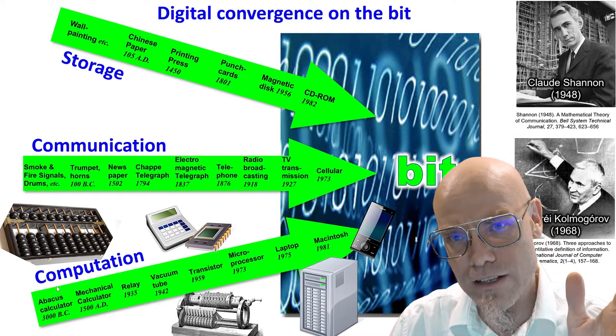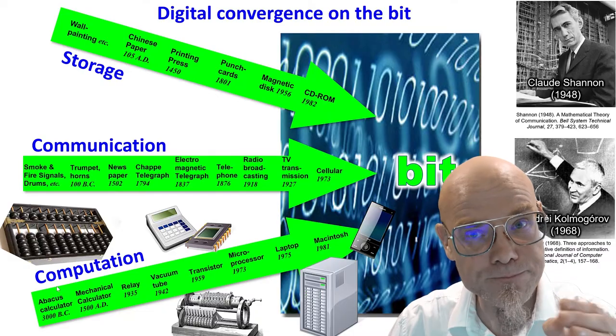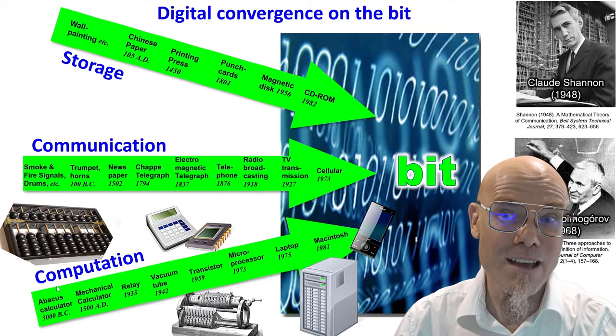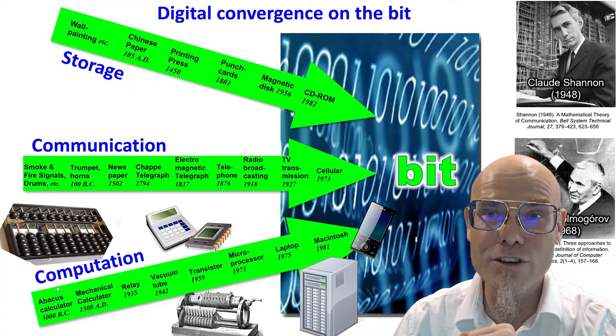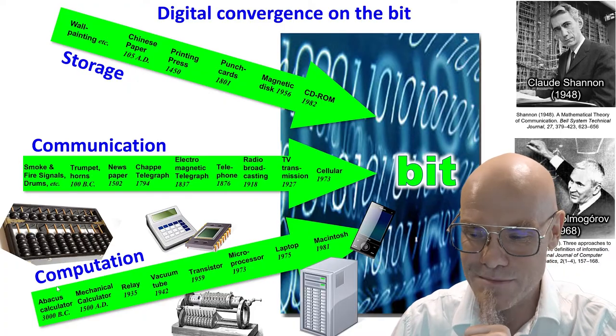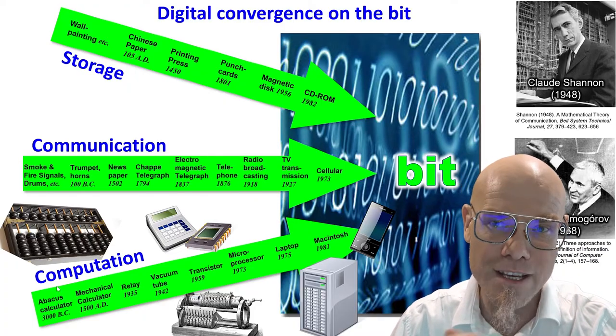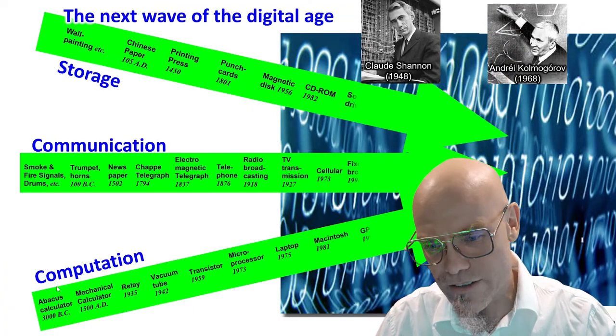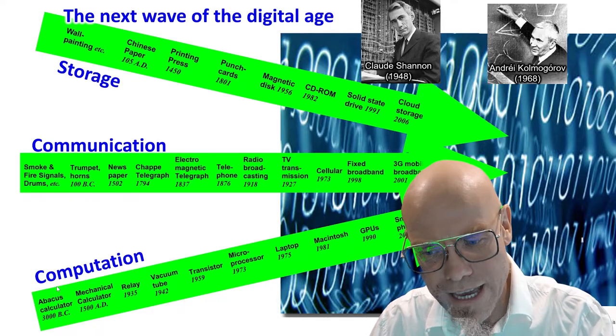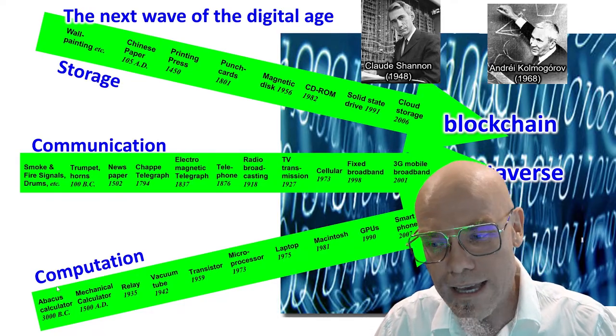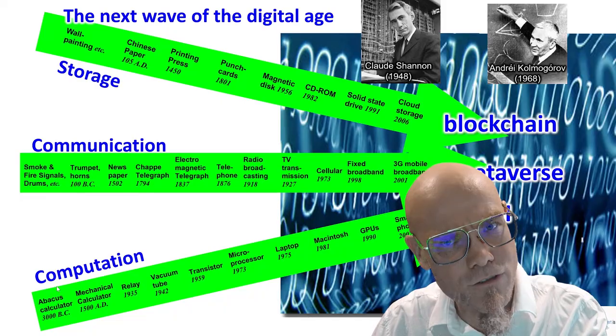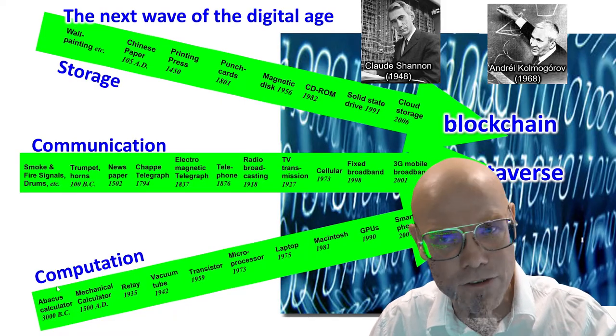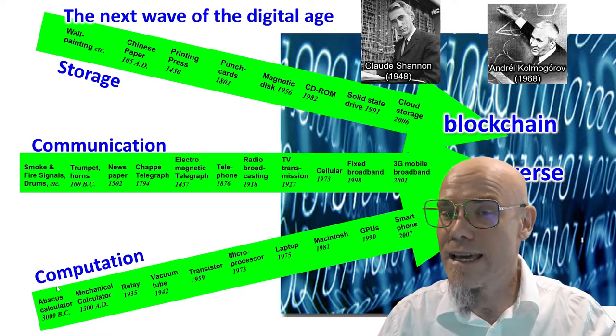Now, the theoretical conceptualization of how the bit is used in computation comes from another mathematician. During the Cold War, they didn't really talk to each other because it's a Russian mathematician called Andrei Kolmogorov and is known as Kolmogorov complexity. And of course, then this continues here. This evolution has continued and is still continuing and it's converging and evolving.